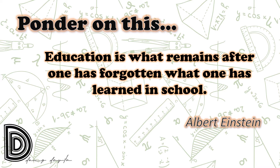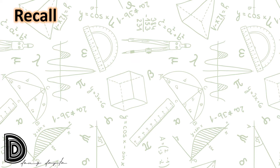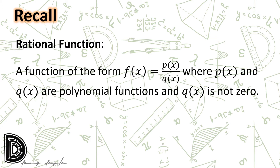Before we continue, let us ponder on this: 'Education is what remains after one has forgotten what one has learned in school,' by Albert Einstein. Let us recall some important concepts. A rational function is a function of the form f equals p over q, where p and q are polynomial functions and q is not the zero function.